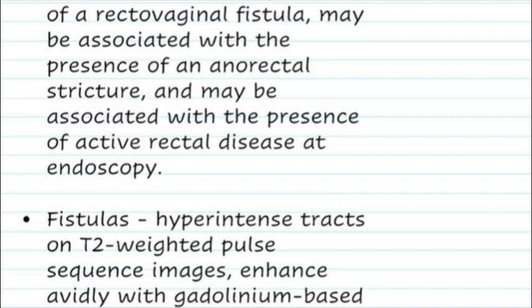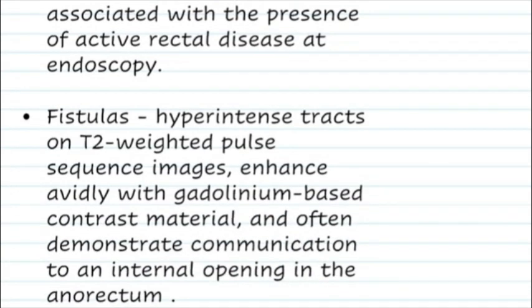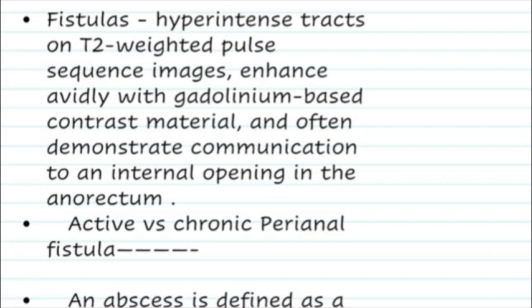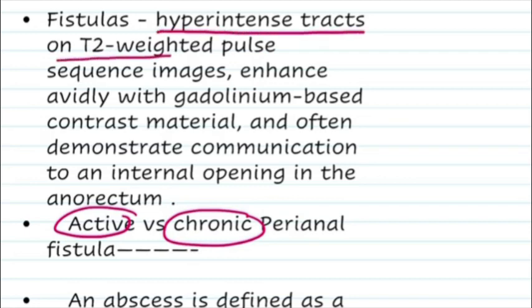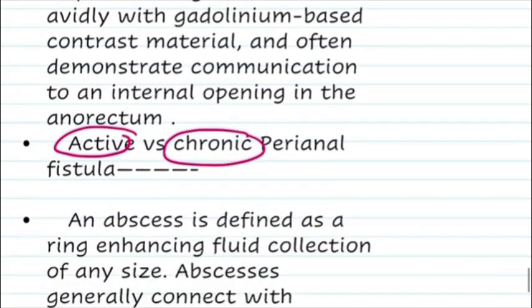On MRI, fistulas can be active or chronic. Active fistulas are visualized as hyperintense tracts on T2 images, and are better visualized on STIR, post-contrast, and DWI images. They enhance on contrast-enhanced MRI and show DWI restriction. Chronic fistulas are T2 hypointense, of a scarred variety.